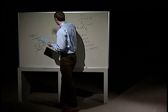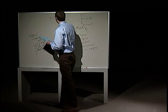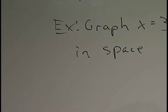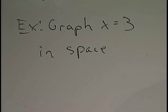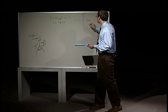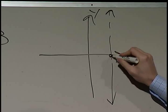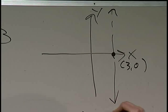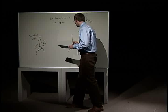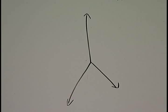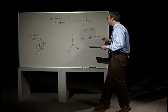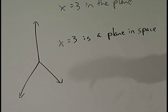So if I want to graph x equals 3 in space, how is this different from graphing it in the plane, or two-dimensional space? Well, in the plane, x equals 3 was a vertical line. So here's two-dimensional space — x equals 3 was that vertical line right there, at the point 3. In 3-space, this is a plane in space — not to be confused with 'the plane,' which is 2-space. This is just a plane in 3-space, so make sure you understand that.